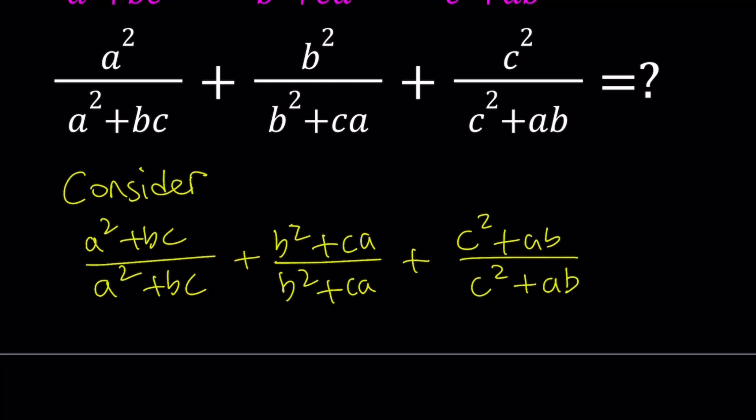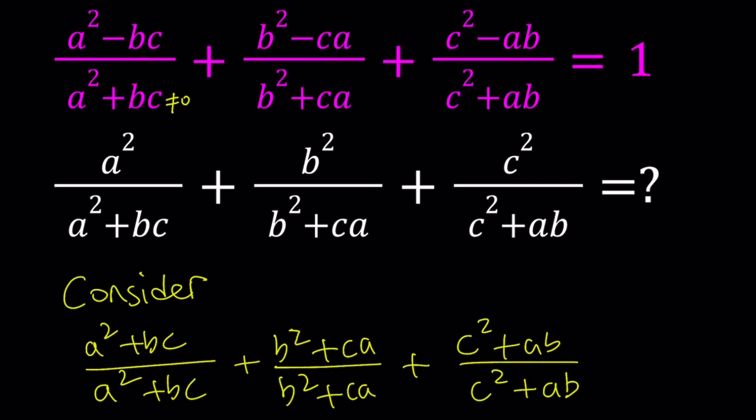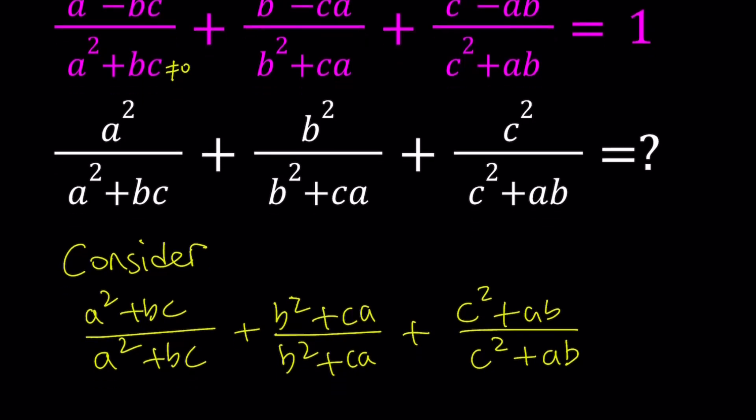But also take a closer look at this expression. I have something divided by itself. As long as that expression does not equal zero, and of course that's a requirement because none of these denominators can equal zero, so that's a given. We're dividing something by itself. That's one. And so it's like 1 plus 1 plus 1. What is that equal to? It's equal to 3. Yes, that's right. So this expression is equal to 3.